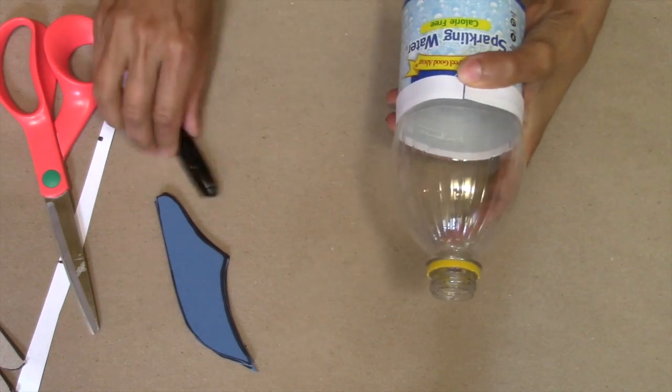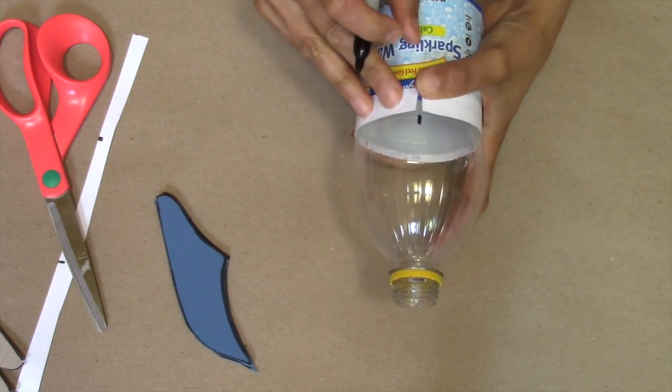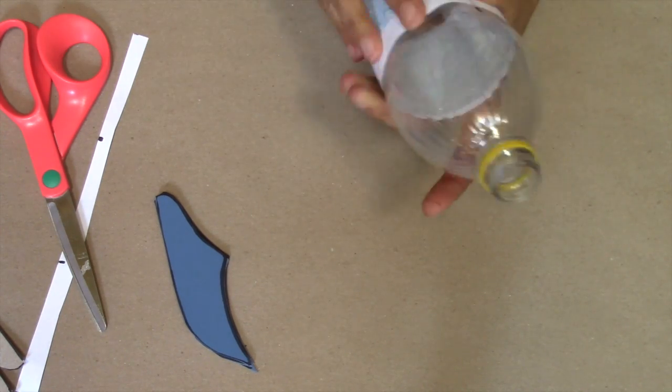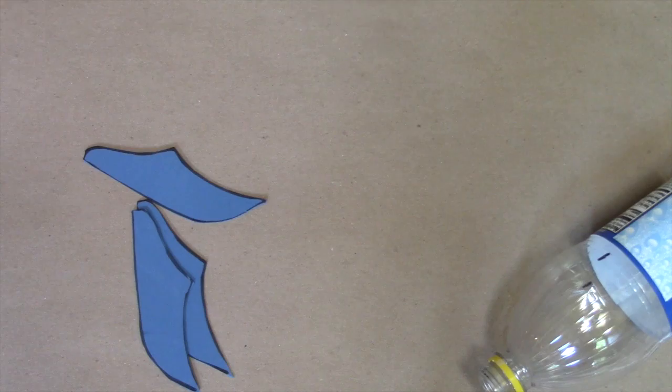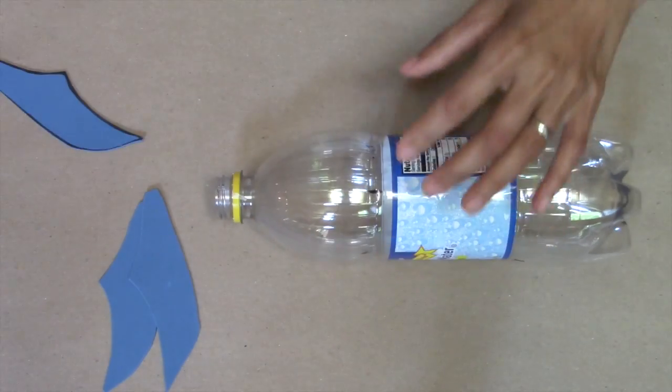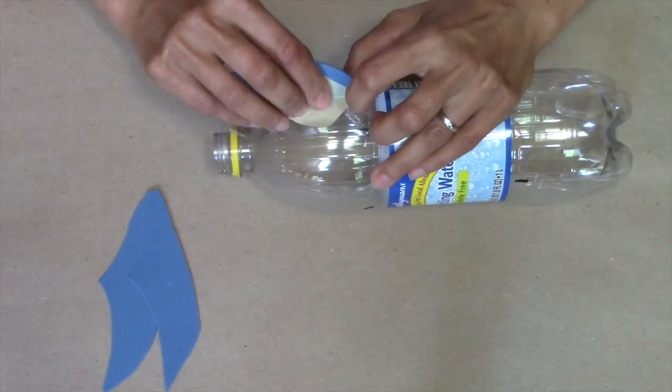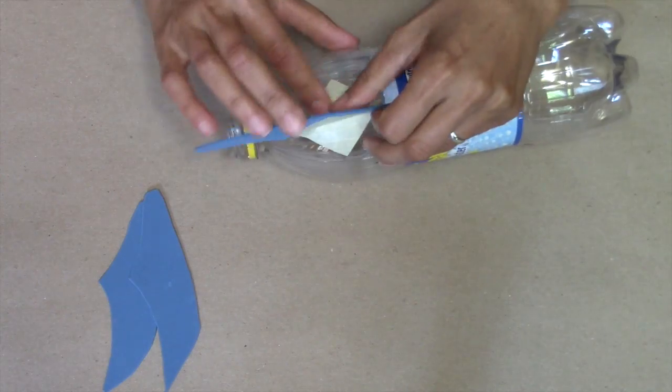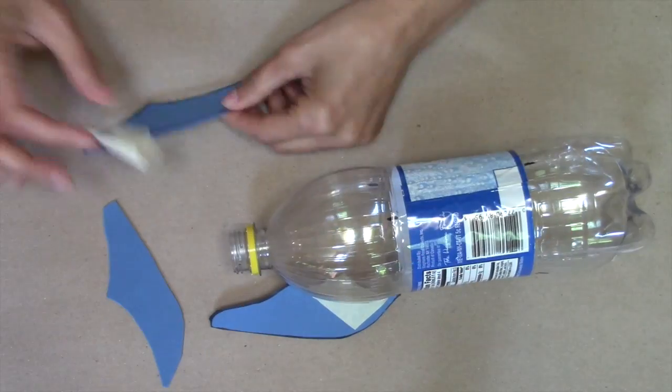Use a marker to mark the bottle at the end of the strip, and then at each location that you marked on the strip of paper. Now all you need to do is line up the fins with your marks, apply a piece of tape, and tape them onto your bottle. You could also use a bead of hot glue to attach your fins.